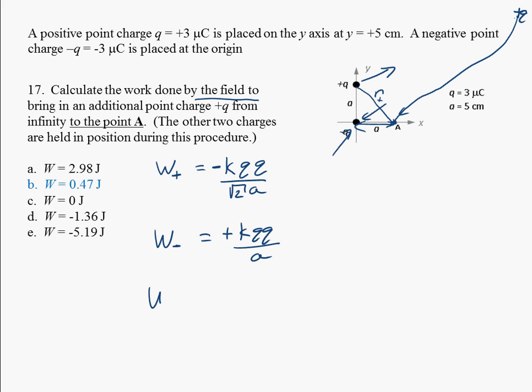So the total work done by the electric field is going to be equal to plus K Q Q over A minus K Q Q over the square root of 2 times A.